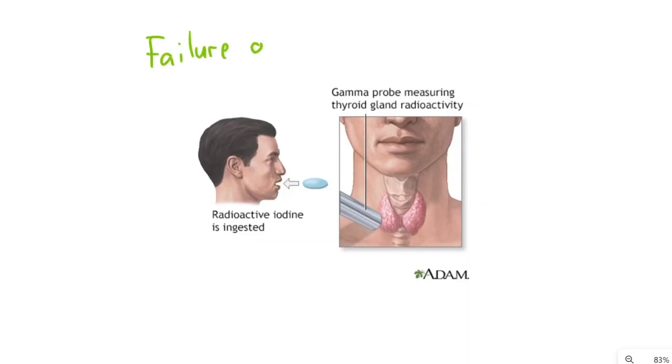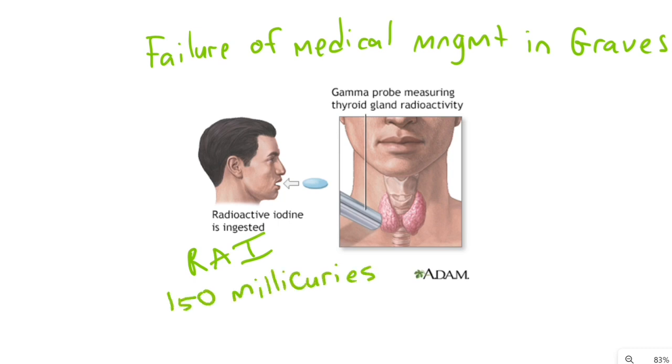If these fail to control symptoms, then ablative doses of radioactive iodine can be used to destroy the thyroid, usually around 150 millicuries or so of radioactive iodine. Exophthalmos is the only symptom that is resistant to antithyroid therapy and even worse after radioiodine ablation.